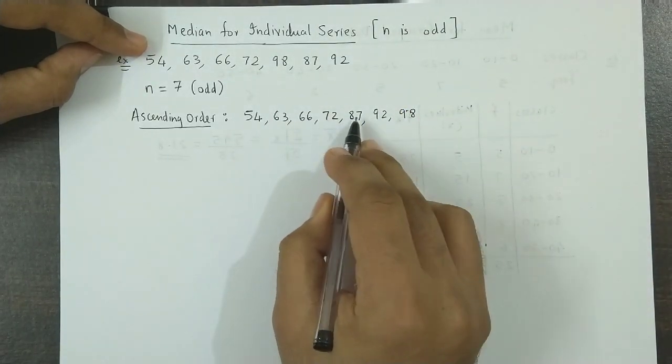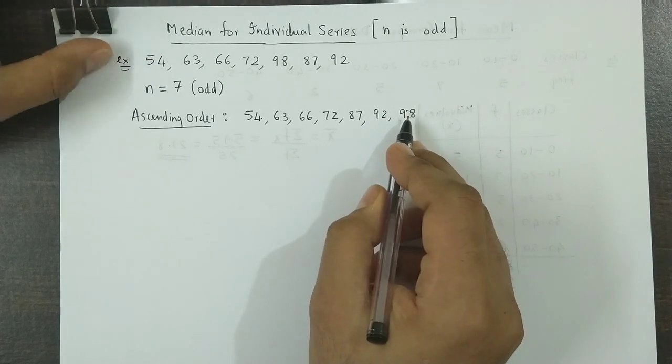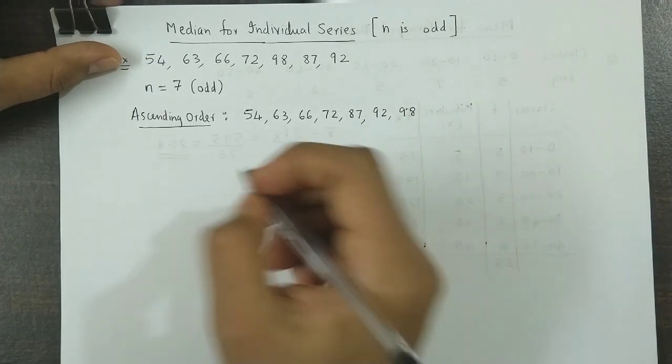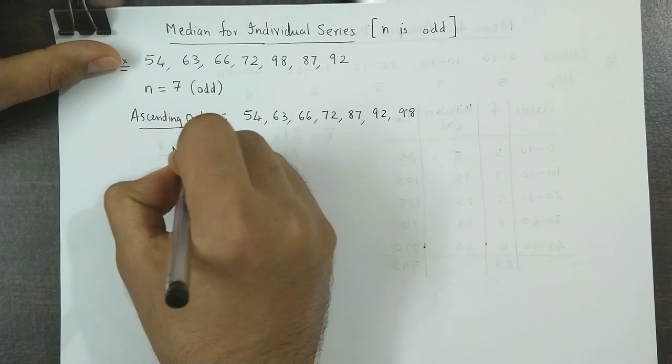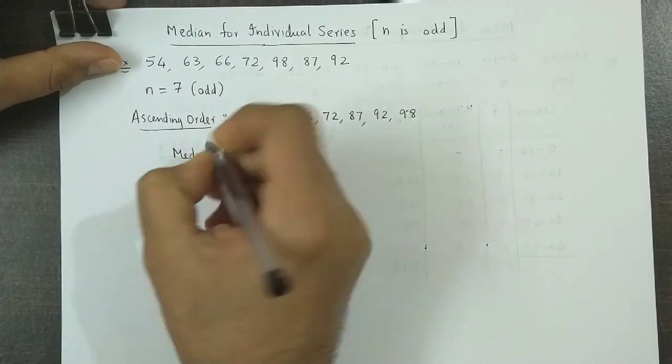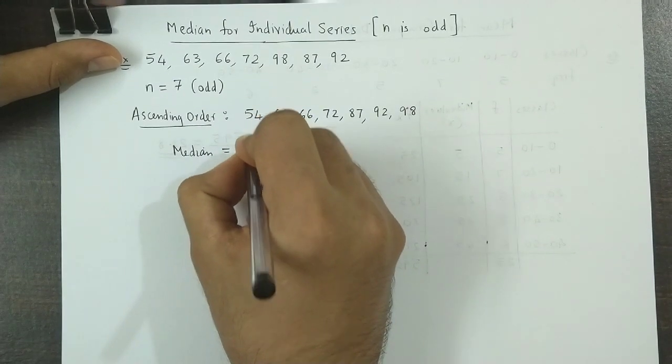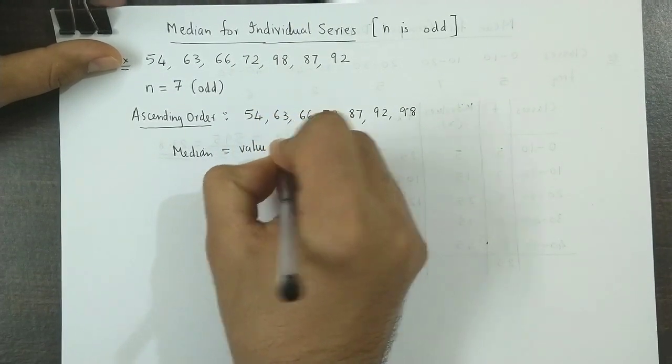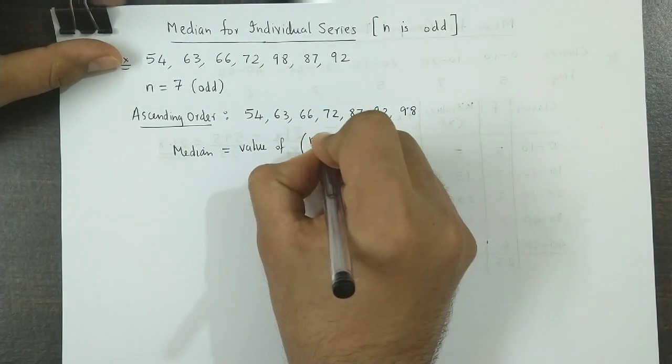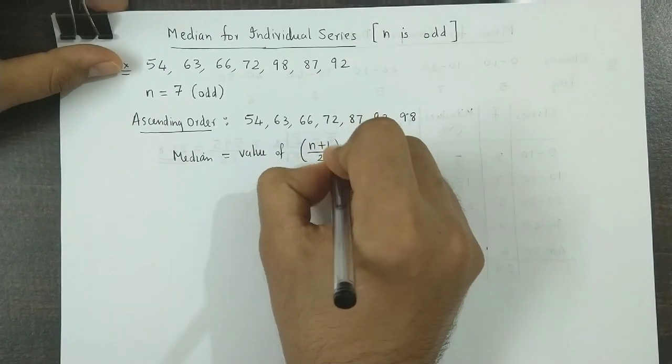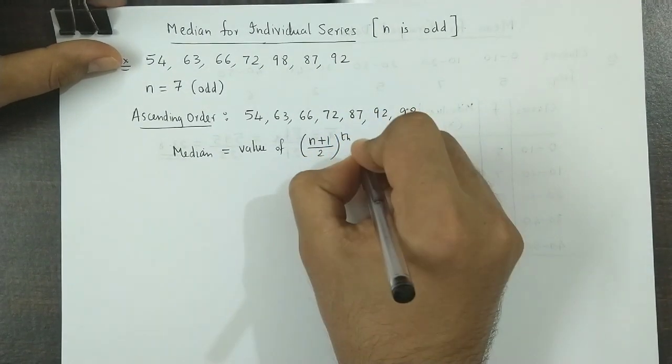So we have 1, 2, 3, 4, 5, 6, 7 observations. Now median is calculated as, when n is odd, median is calculated as the value of n plus 1 upon 2 observation.